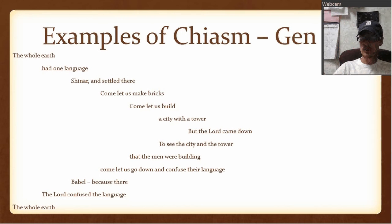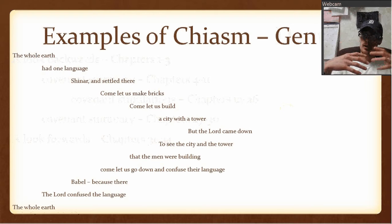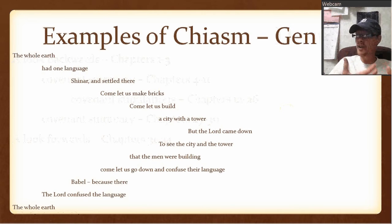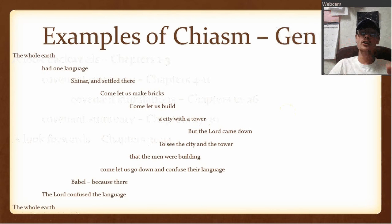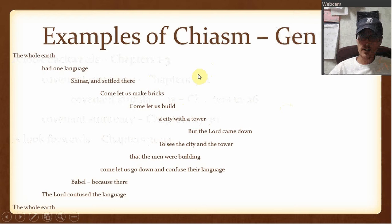In the video about the books of wisdom and poetry, I started talking about something called chiasm. I didn't really get a chance to give a good explanation of chiasm or some of the examples that it occurs in. So this video is not another part of the lessons, it's just an addendum to that lesson. I'm going to show you three examples of chiasm.